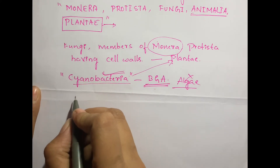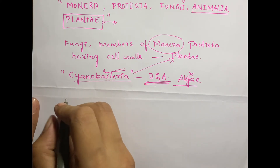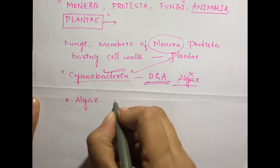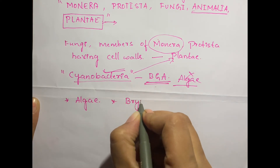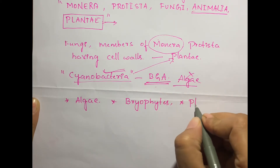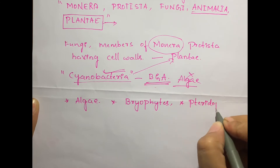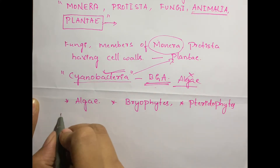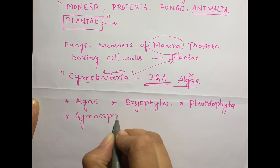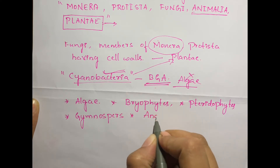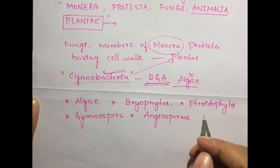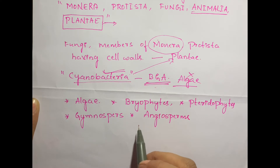So which are the groups we are going to study under the kingdom Plantae? Under the plant kingdom we will be studying: first, Algae; second, Bryophytes; third, Pteridophytes; fourth, Gymnosperms; and fifth, Angiosperms. These are the five groups which we are going to study in detail.